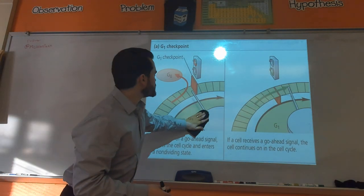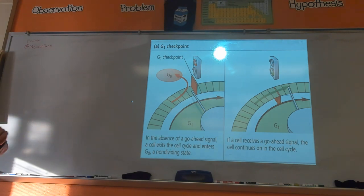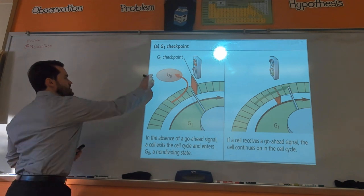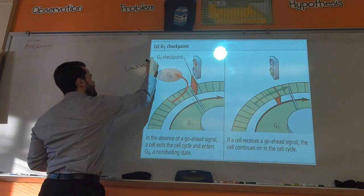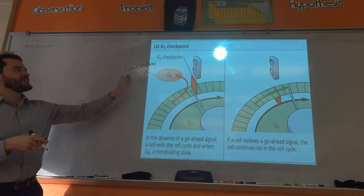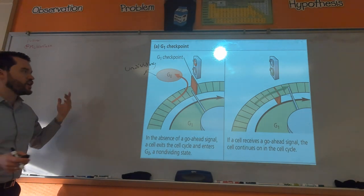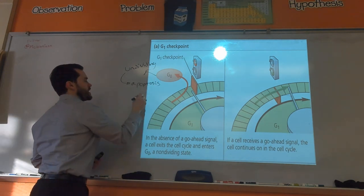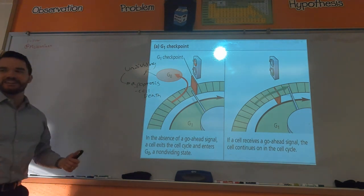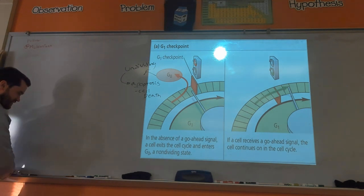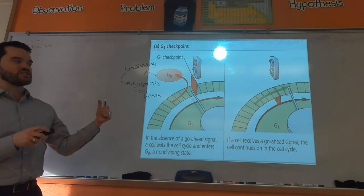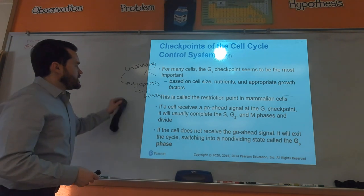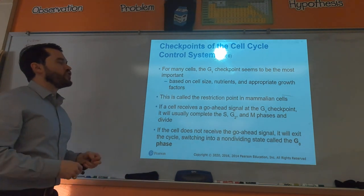The G1 checkpoint is the main checkpoint determining whether a cell will divide. There's also something called G0 — non-dividing cells. If a cell fails the G1 checkpoint, it gets kicked out and becomes a non-dividing cell. If there are serious errors, the cell may be labeled for apoptosis — programmed cell death. If growth is done properly and growth factors are present, the cell moves past the G1 checkpoint.